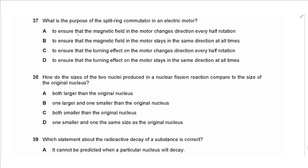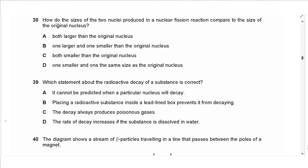Question 37: what is the purpose of the split-ring commutator in an electric motor? It does not affect the magnetic field or change the direction of turning. Its purpose is to ensure the rotation is continuous in one direction by reversing the current in the coil every half cycle. The answer is D.